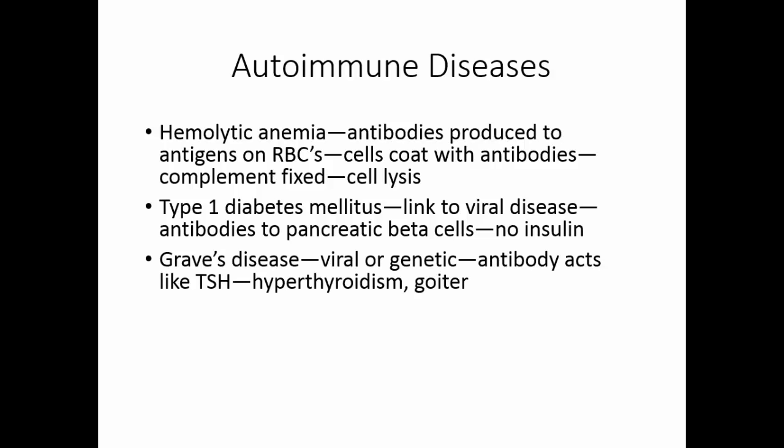Graves' disease also has a viral and a genetic link. Here the antibody does not destroy cells, but rather acts like thyroid stimulating hormone. So when the antibody attaches to the cells of the thyroid gland, the thyroid gland is stimulated to grow — so we get goiter — and to secrete thyroxin. So we have hyperthyroidism, weight loss, anxiety, and all of the things that go with that. Treatment for this is usually to remove the thyroid gland.